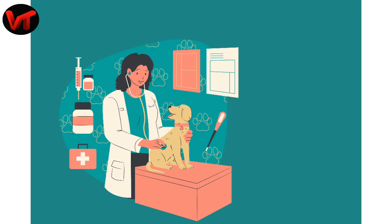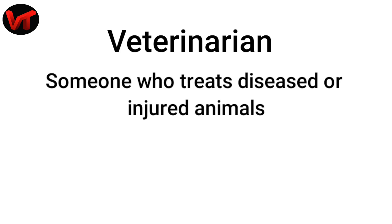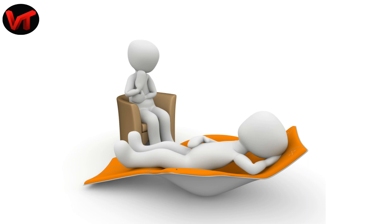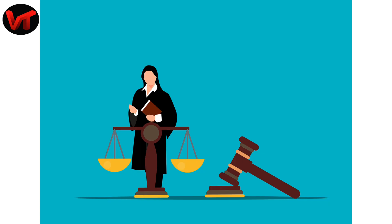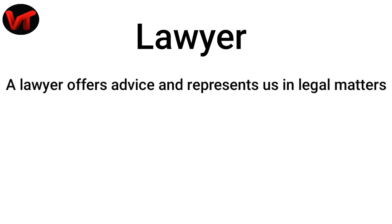A doctor for animals is called a Veterinarian — someone who treats diseased or injured animals. Those who treat mental illness are called Psychiatrists — a doctor who treats mental illnesses. Those who practice law are called Lawyers. A lawyer offers advice and represents us in legal matters. He is also called an Attorney.